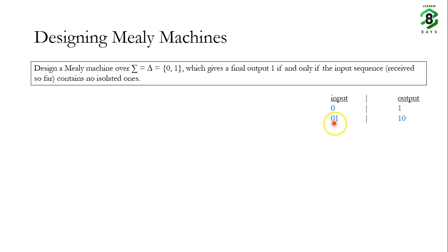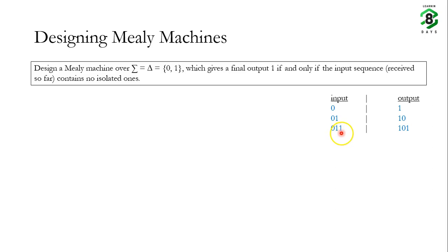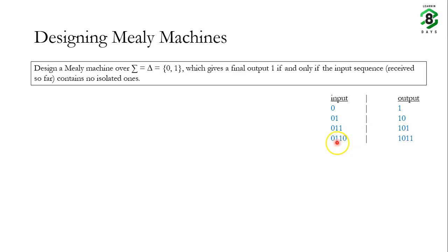If we give the input sequence 0 1 to the machine: when it receives 0, there is no isolated one, so output is 1. But the moment it receives a 1, it now contains an isolated 1, so the machine should produce output 0. For the input sequence 0 1 1: receiving 0 gives output 1, receiving the first 1 gives output 0, then receiving another 1 means no isolated ones remain, so output becomes 1 again. So for input 0 1 1 0, the output is 1 0 1 1.